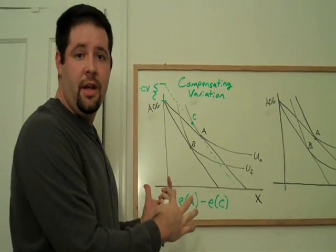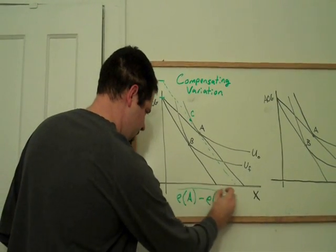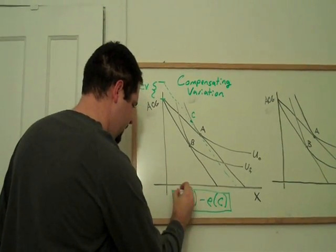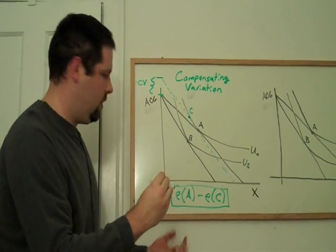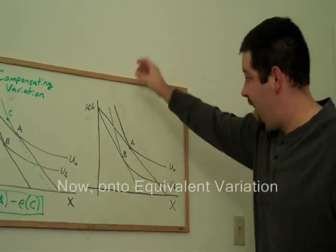So that's compensating variation. That's how you find it on a graph. And this will actually turn out to be a pretty useful equation for compensating variation.